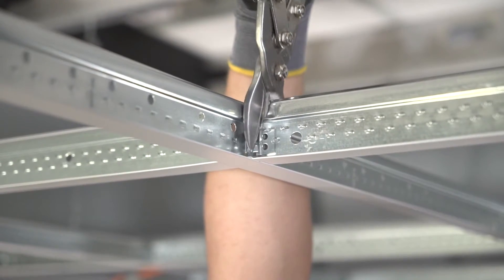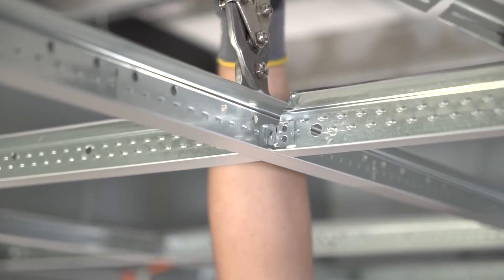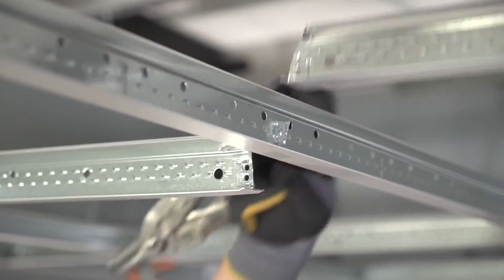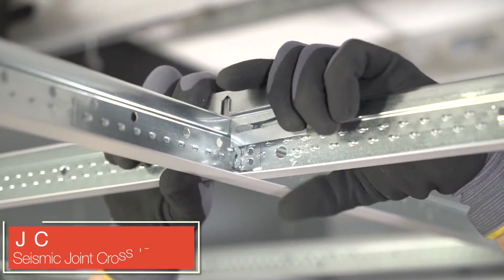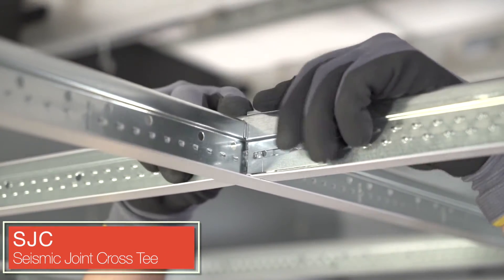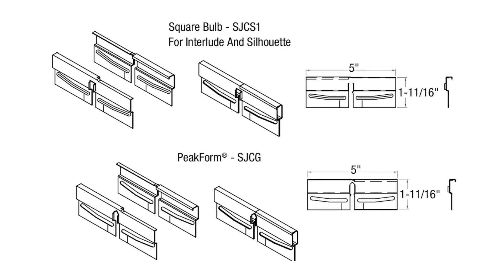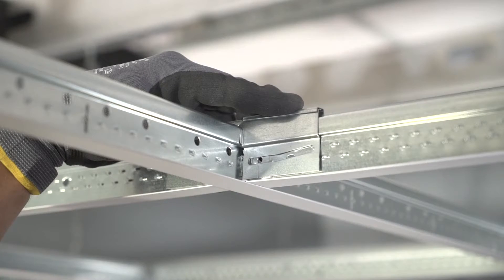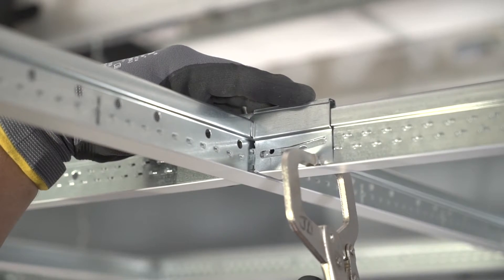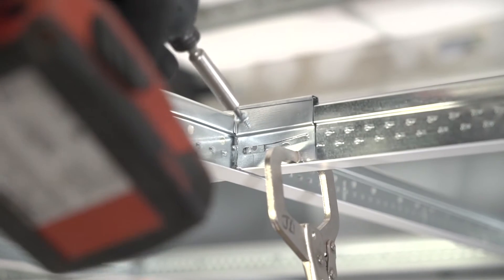We will secure them back to each other with the SJC or Seismic Joint Cross T clip. We manufacture a clip set for interlude and silhouette with their square bulbs and a peak form set for prelude and superfine. After locking the clips together, secure with a C-clamp and place a sharp point framing screw at the indent mark.